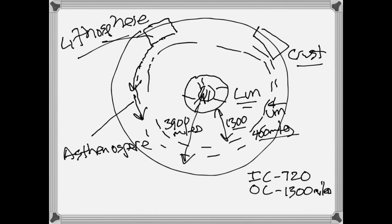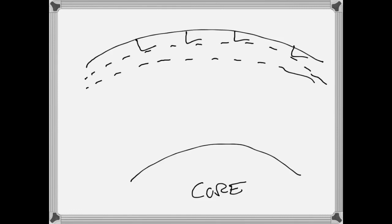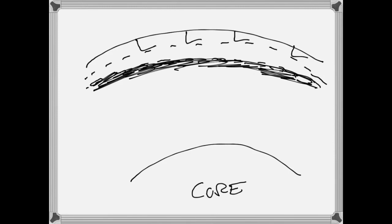Let's draw our cross section a little bit differently now. Here is our crust plus our upper mantle, and we'll draw the core as well. The crust plus the uppermost part of the upper mantle is what we call the lithosphere. Beneath the lithosphere is the asthenosphere. The asthenosphere is also relatively thin — maybe about 300 miles or so in thickness — though it can be a little bit thicker in some places and a little bit thinner in others than what the lithosphere is.